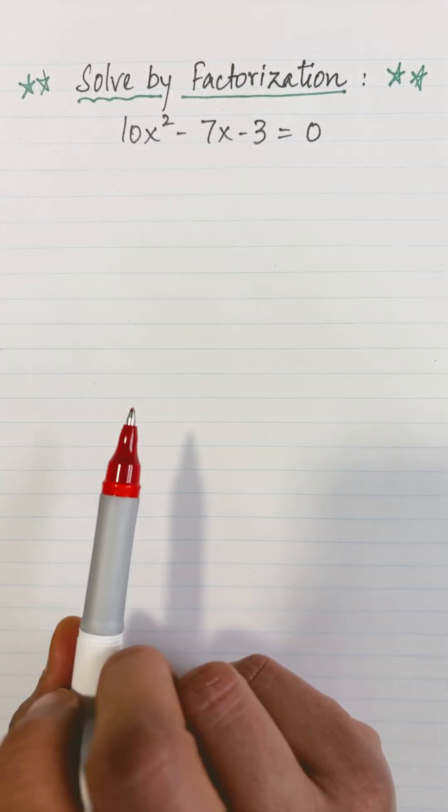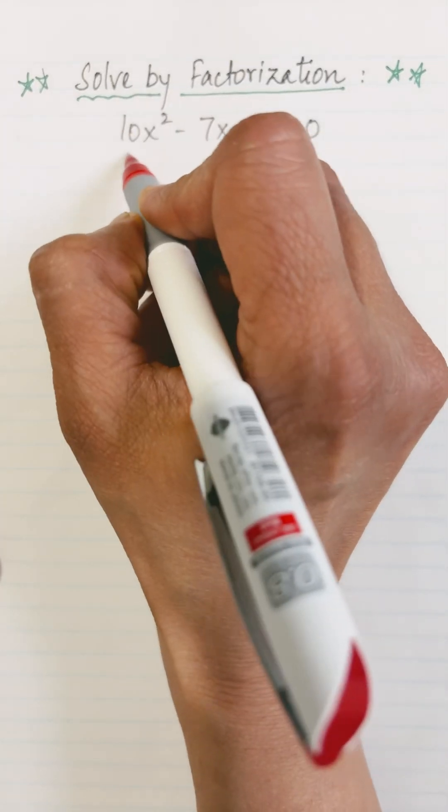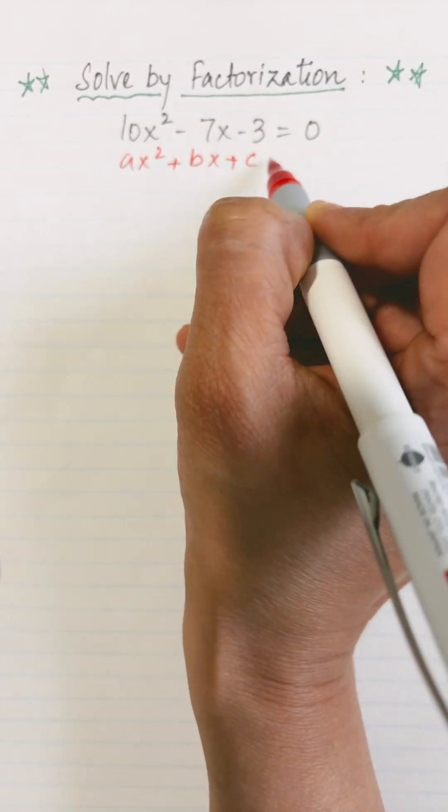Let's solve this quadratic equation by the method of factorization. This equation is of the form ax² + bx + c = 0.